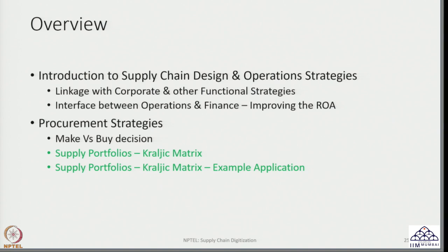A facility could be a plant, an office, a warehouse, or a collection of several such facilities. Every organization looks at procurement strategies in a different way. However, there are some interesting ways to look at strategic procurement, one of which is through supply portfolios — which is the Kraljic matrix.